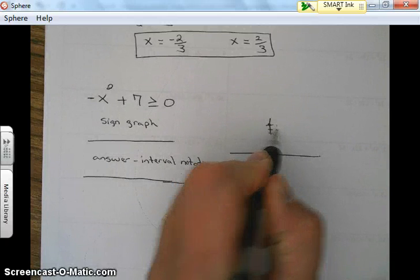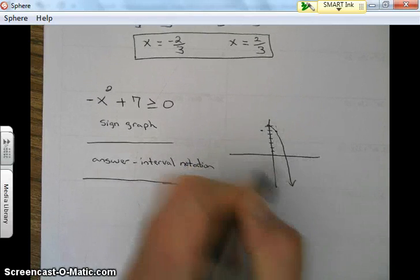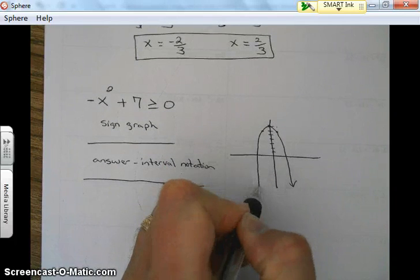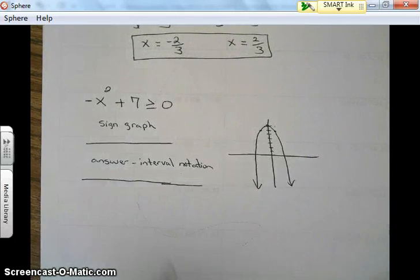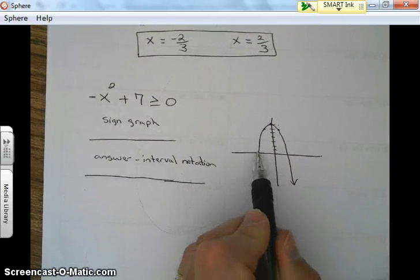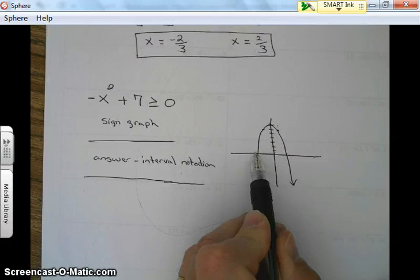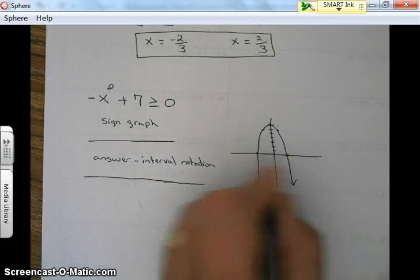So if I go over one, down one, over one, down one. Now, a sign graph, before we do a sign graph, we have to find out what our zeros are. Where do they cross the x-axis? So we have to find out these two numbers right here.